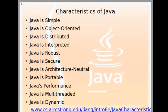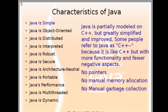Now we will talk about the characteristics of Java. Java is simple — it is partially modeled on C++ but greatly simplified and improved. Some people refer to Java as C++ with more functionality and fewer negative aspects. Java doesn't contain pointers, no manual memory allocation, and no manual garbage collection; all these things are handled by Java implicitly.